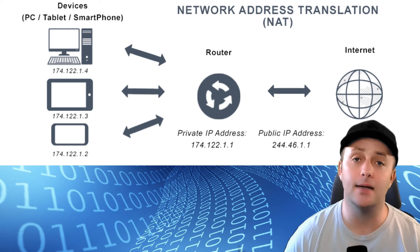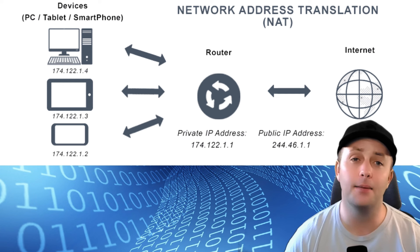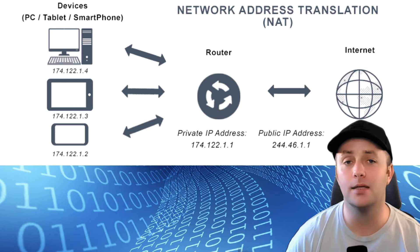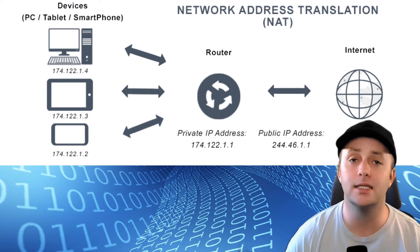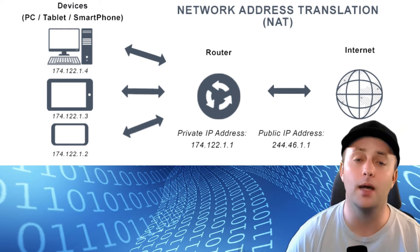When these devices need to communicate with the internet, they can't use their private IP addresses, because those addresses are only valid inside your local network. This is where NAT comes in. When one of your devices sends data to the internet, your router uses NAT to replace the private IP address with the router's public IP address. From the internet's perspective, it looks like all the data is coming from a single device — your router — rather than from all these different devices within your home network.